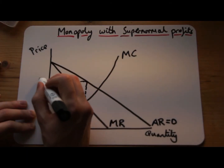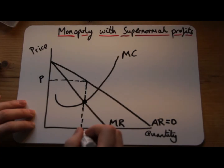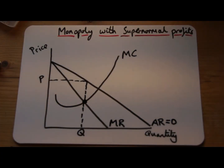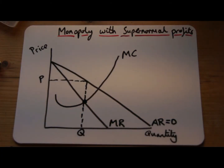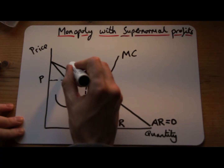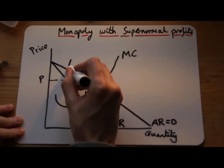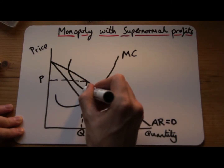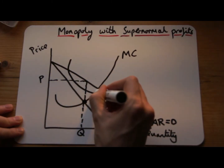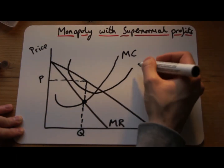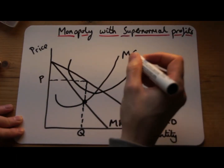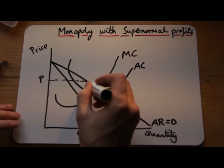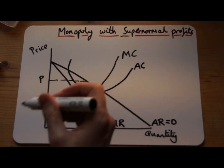We now have a price of P and a quantity of Q. But now I want to show supernormal profits. The reason I've left the average cost until the end is so I can make sure the average cost intersects the marginal cost at the bottom point, and also that the average cost line goes below the price line.